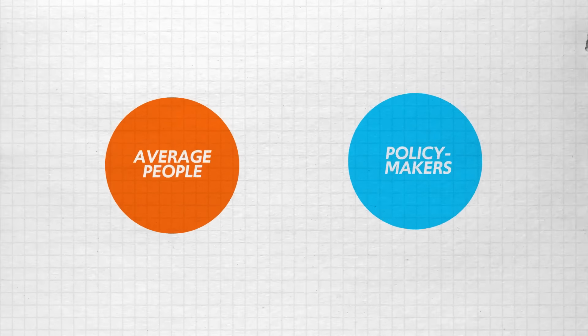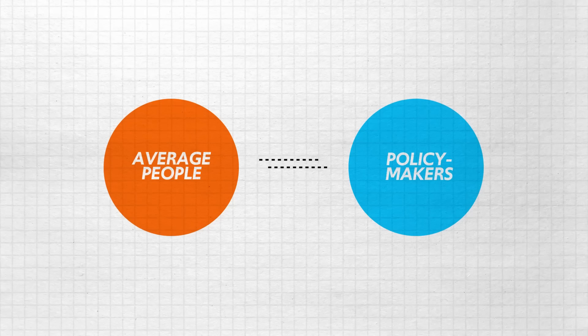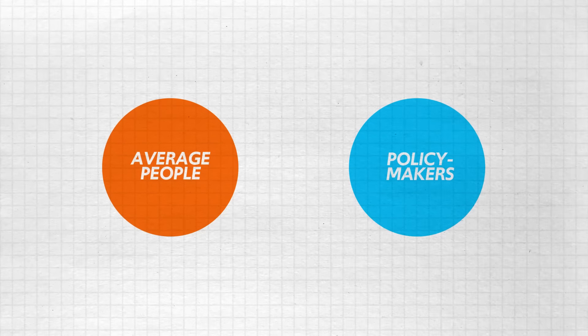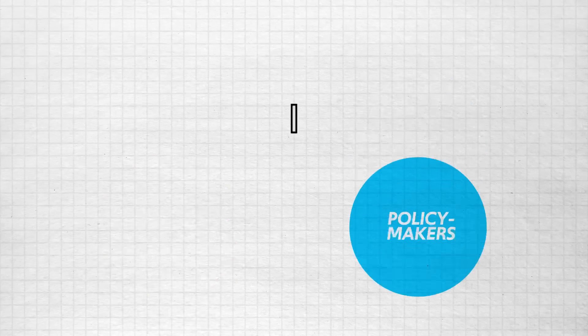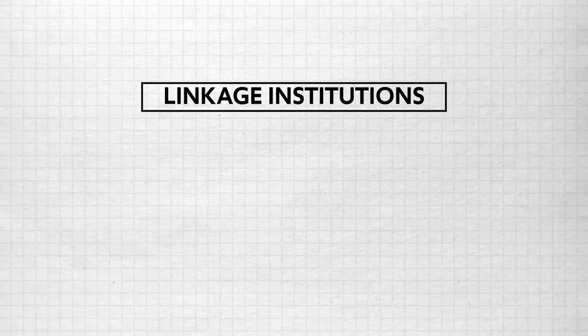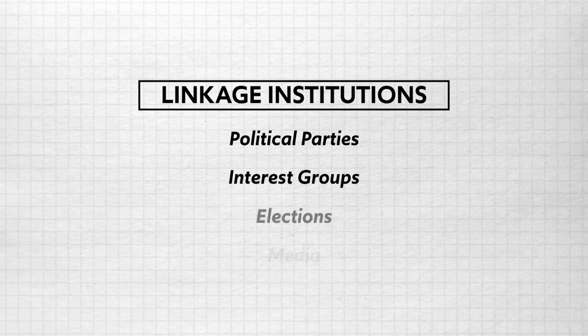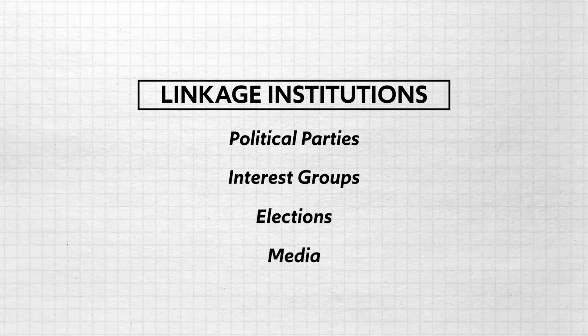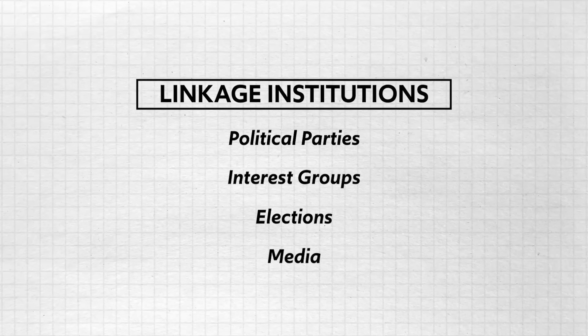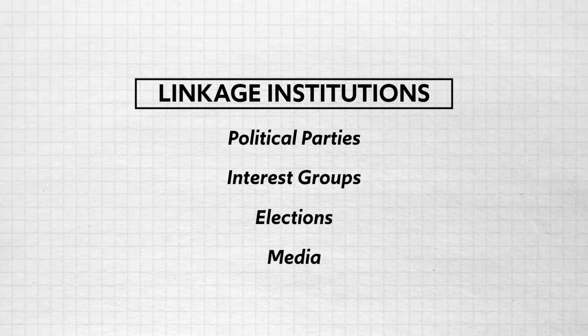Linkage institutions are structures that act as intermediaries between average people like you and me and the policymakers in the federal, state, and local governments. There are four linkage institutions you need to know: political parties, interest groups, elections, and media. Each exists to allow we the people to communicate our preferences to policymakers. Since each will have its own video in Unit 5, this video focuses on political parties as linkage institutions.